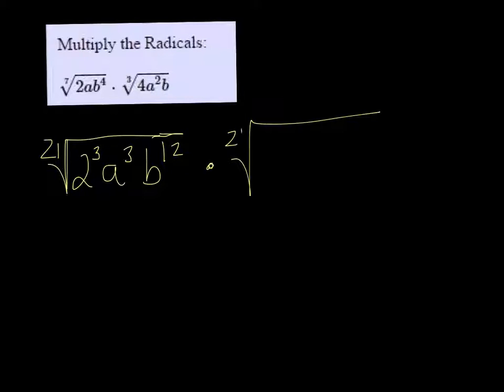So we get the 21st root of 4 to the 7th. Again, 4 is just 4 to the 1st, and 1 times 7 is 7, a to the 14th, and b to the 7th. If they don't already have powers, the power is 1, so you're just multiplying 1 by whatever the number is.